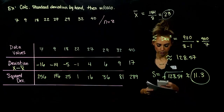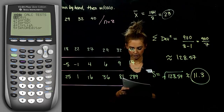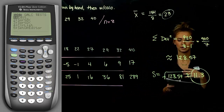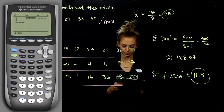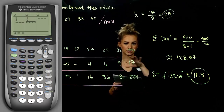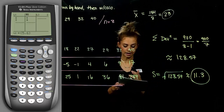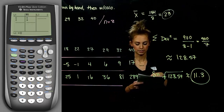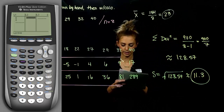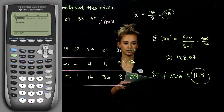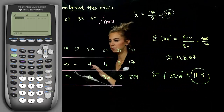Go into STAT and select the Edit option. You might have some data already inputted — maybe on accident or you're borrowing a calculator. To clear that out: go all the way to the top of whatever list you're on — L1, L2, L3 — press Clear, then press the down arrow, and that will clear the entire list. You won't have to delete everything by hand. Now we have a blank slate to work with.